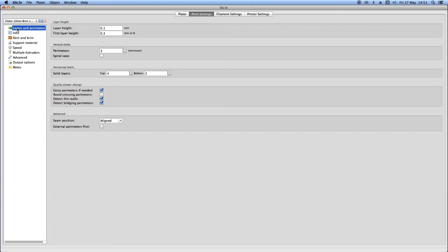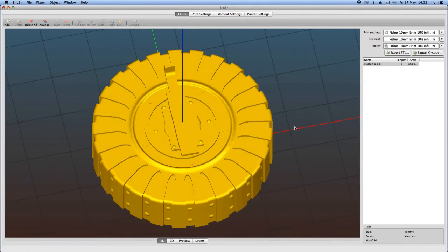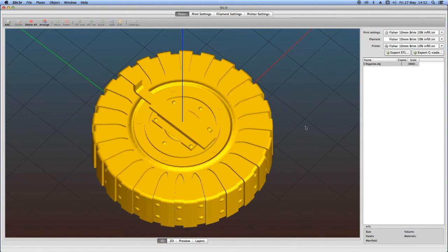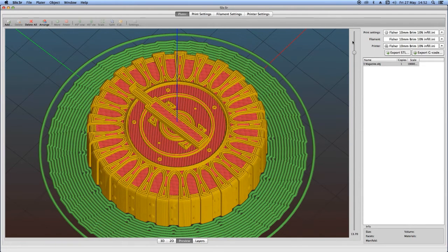The slicing program allows the user to modify a whole range of settings, including operating temperatures, the speed of the axes, and in fact, even the resolution of the machine, so how small the vertical layers are, for example, and things like internal density and support structures, which help you create a better print.